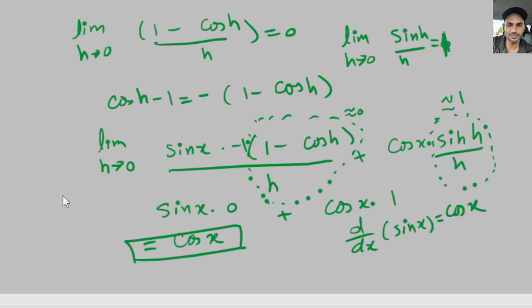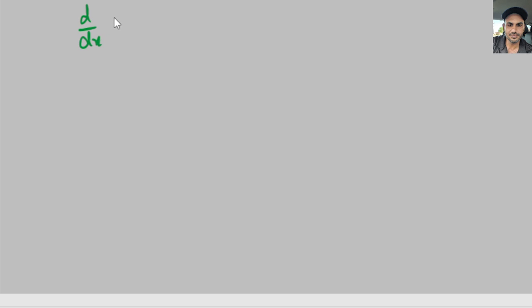Now I'm going to use this result and apply the chain rule. So here we have d over dx of sine of u equals cosine of u times du over dx.